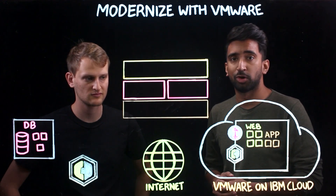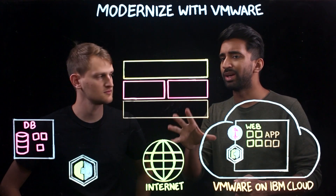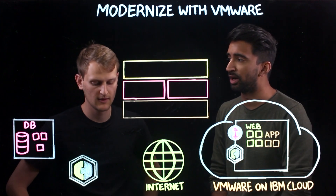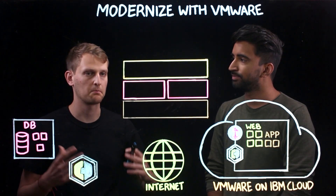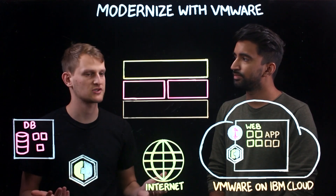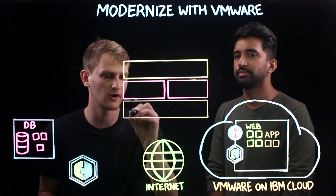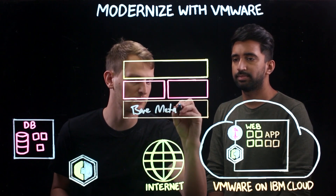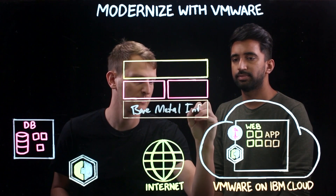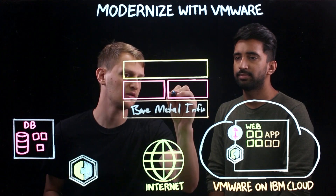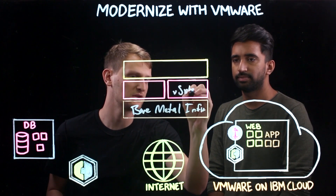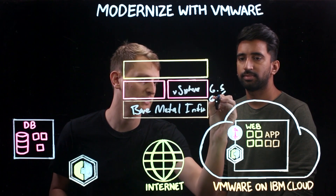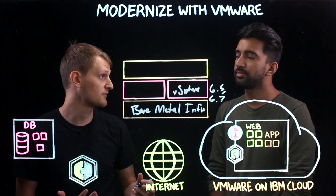We've got a few things already sketched out on the board, but let's start with the stack that we need to get started with modernizing with VMware. On IBM Cloud, our fundamental VMware software stack is quite simple — you have your bare-metal infrastructure where your environment runs, and then on top we have vSphere. We actually do automated deployments of 6.5, 6.7, and any future releases from a VMware perspective.